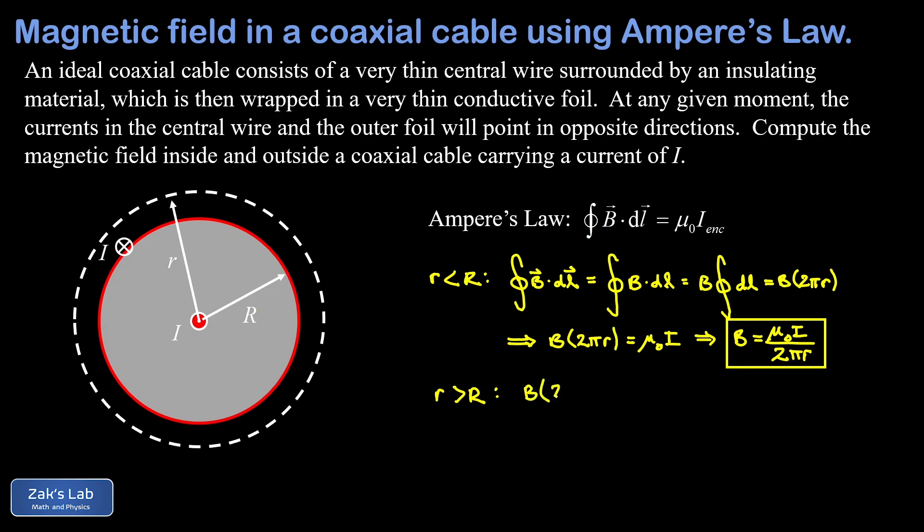The left-hand side of Ampere's Law is going to reduce to B times 2π little r for all the same reasons. But this time on the right-hand side of Ampere's Law, our net enclosed current is zero because we have one current penetrating the Ampere loop pointing out of the page and another equal current penetrating that loop pointing into the page. That gives us a net of zero, so the right-hand side of Ampere's Law reduces to zero.